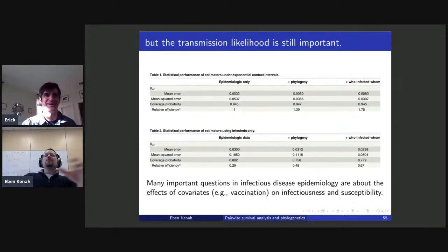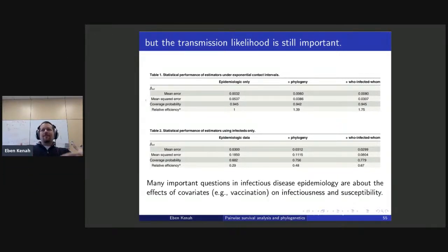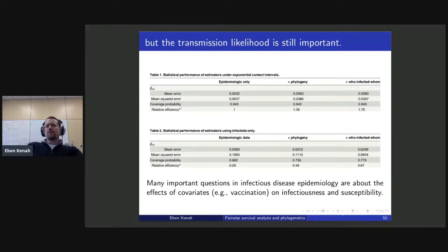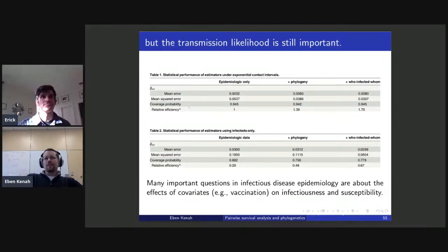When we do the same project but use data only on infected people, we get much larger mean squared errors, much lower coverage probabilities, and much lower relative efficiency. The phylogeny can't dig us out of the hole we dug for ourselves by using data on infected only. Many important questions in infectious disease epidemiology are about the effects of covariates on infectiousness and susceptibility, and the timing of infectiousness relative to symptom onset — to properly answer those questions we need denominators in our data.